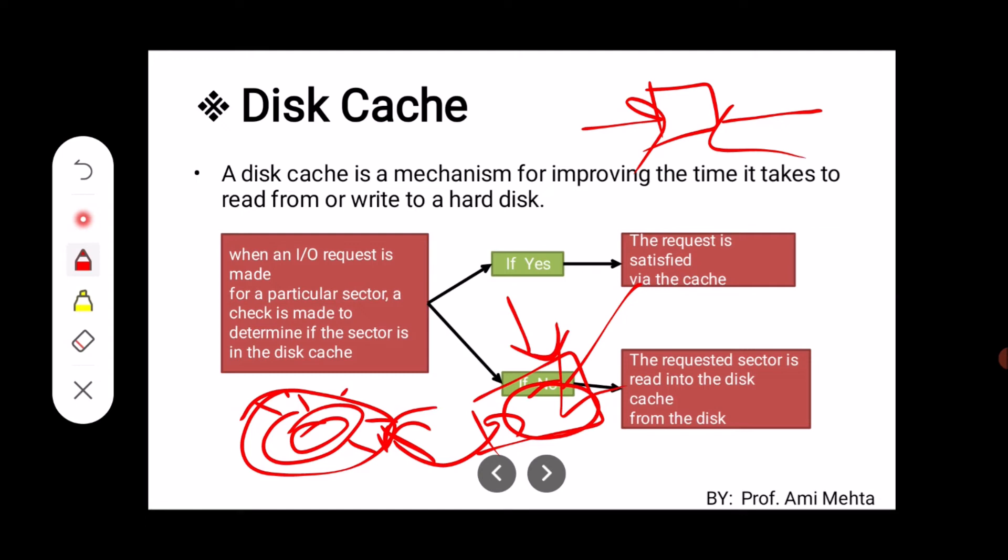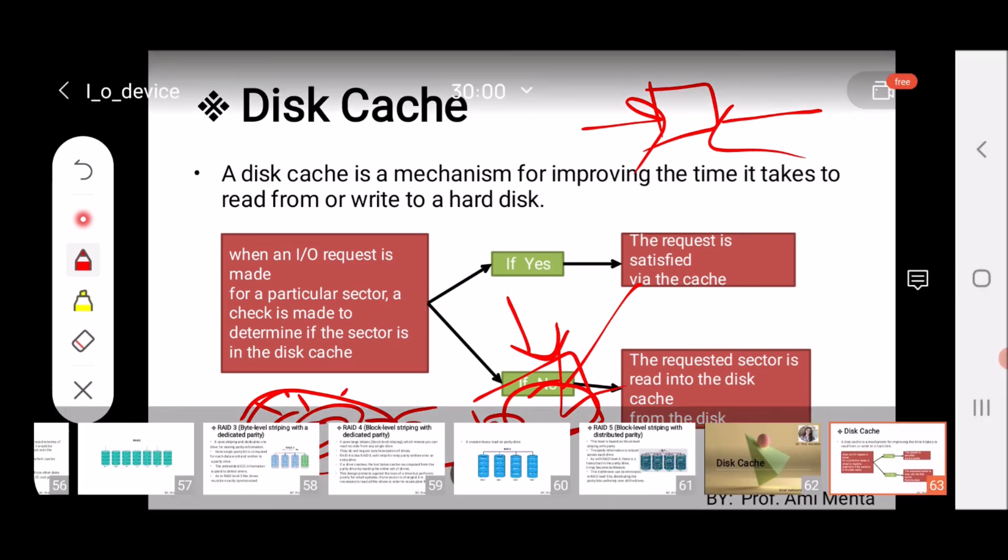This is the concept of disk cache. One memory portion is occupied as disk cache, and whenever there is a request it is checked if that sector data is present in the disk cache. If yes, it will be satisfied from that. If not, the data will be read from that sector and written into the disk cache.